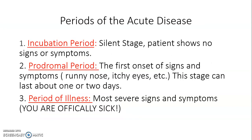Now I'm going to talk to you about the periods of acute diseases in a little bit more detail. The first period is the incubation period, also known as the silent stage. This stage shows no types of signs or symptoms in patients. The second period is the prodromal period. This is where the signs first start to come on and patients tend to get itchy nose, runny nose, scratchy throat, fever — all types of symptoms that you can think of if you're about to catch a cold. This period usually lasts about one or two days.